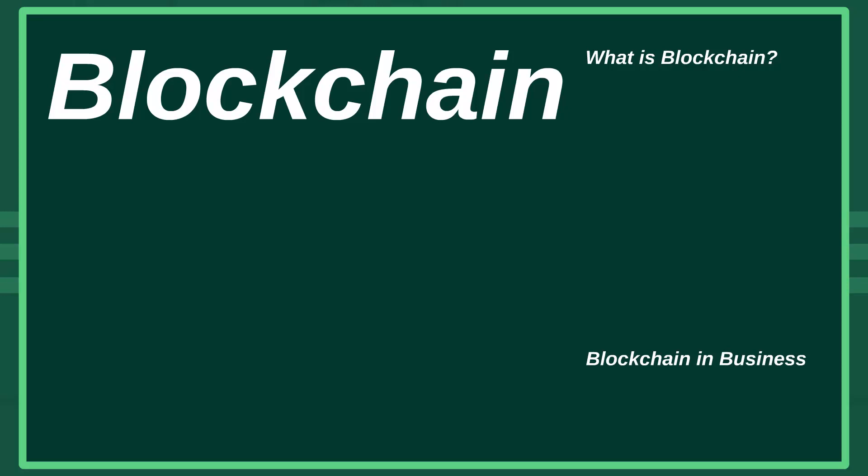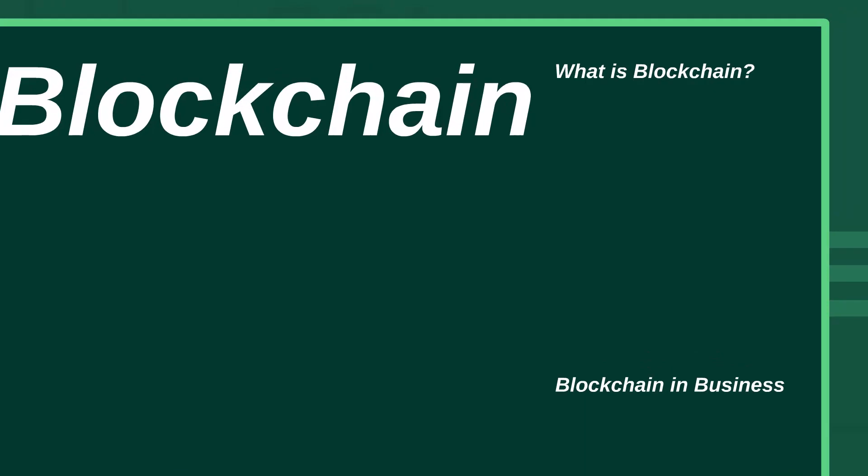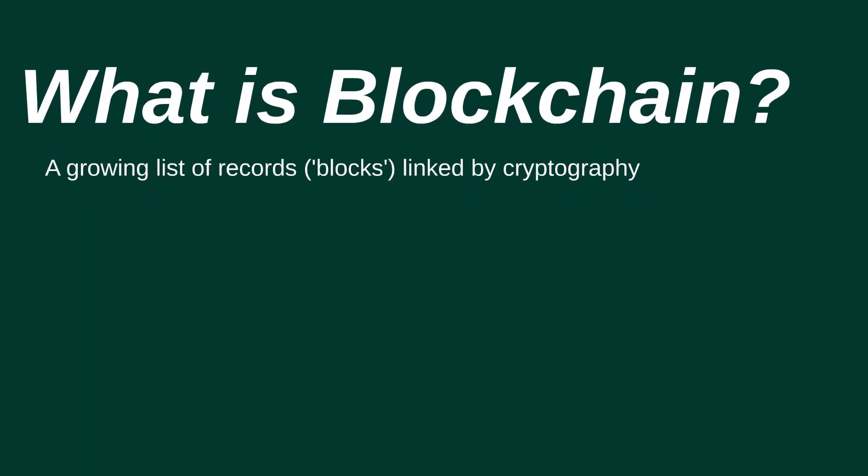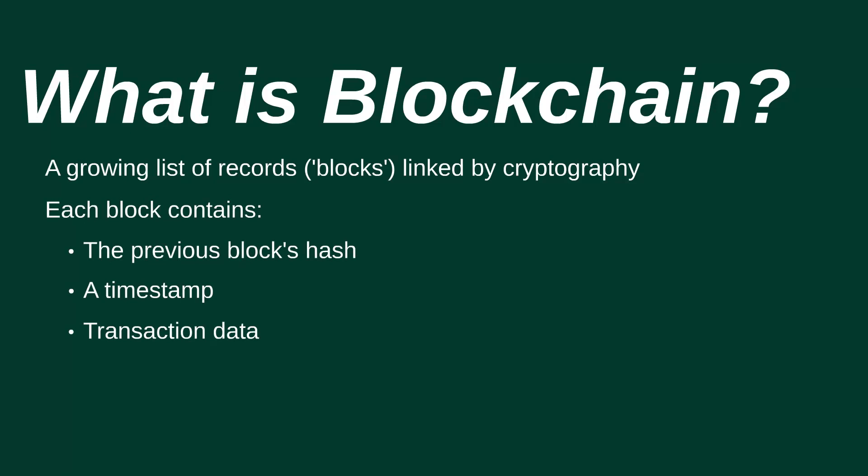The first question we've got to ask ourselves is: what exactly is blockchain? In its most simple description, a blockchain is a growing list of records called blocks, and these blocks are linked together using cryptography. Each block contains a cryptographic hash of the previous block, a timestamp, and transaction data. For your exam, you don't need to know how blockchains work, just how they impact on a business, but we'll go into a bit more detail to give you a broad understanding.